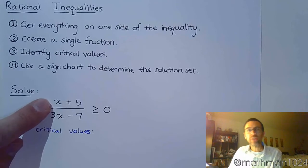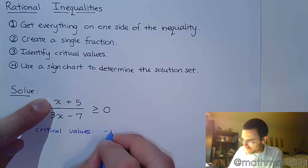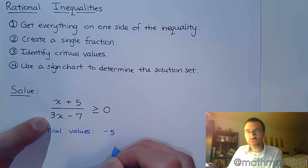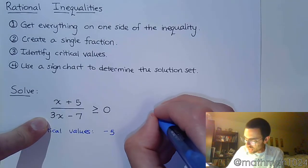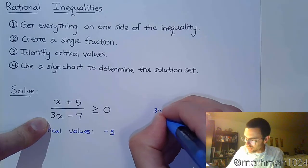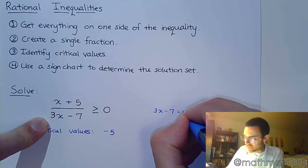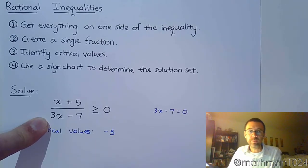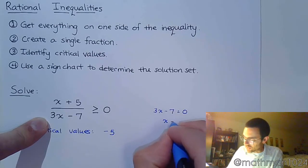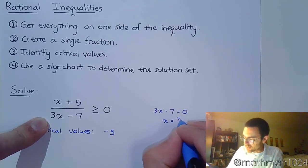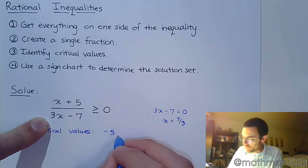What makes the numerator equal to zero? That would be x = −5. What makes the denominator equal to zero? If you have a hard time seeing that, just take 3x − 7, set it equal to zero and solve it. When you do that, you'll find that x = 7/3. That is your other critical value.